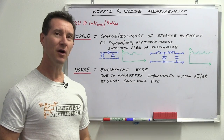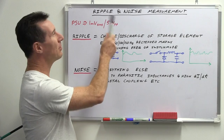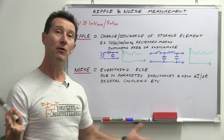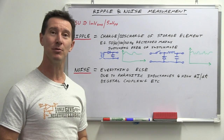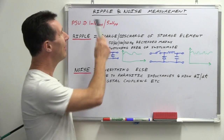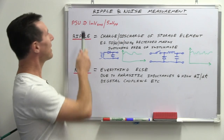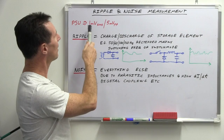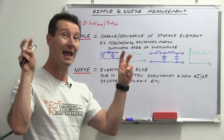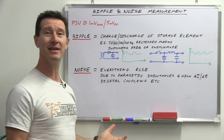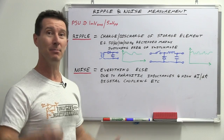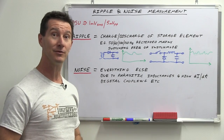Hi, welcome to Fundamentals Friday. Today we're going to take a look at ripple and noise measurement and specifications. You're familiar with it - you've seen it on your bench power supply. They might give a typical value like 1 millivolt RMS slash 5 millivolts peak-to-peak ripple and noise. What exactly does that mean? What's ripple, what's noise, and how do you measure it? What are the traps for young players?